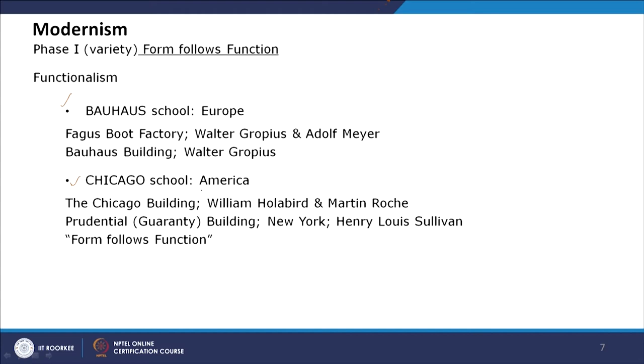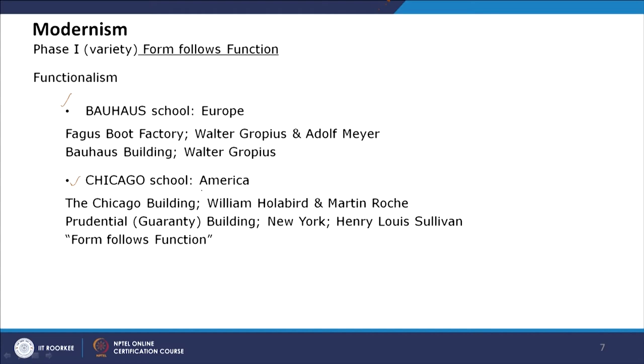Bauhaus was part of functionalism, as was the Chicago School in America. Bauhaus started in Europe, and two of its main and famous buildings are the Fagus Boot Factory and the Bauhaus Building. The Bauhaus Building was a design school or university where the Bauhaus concept of design was followed, designed by Walter Gropius, who was a faculty member. He designed the Fagus Boot Factory with Adolf Meyer. We will discuss these two buildings to interpret the characteristic features of the Bauhaus movement.